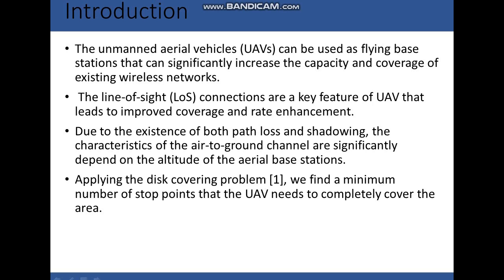For basic introduction, the unmanned aerial vehicle can be used as a flying base station so that you can significantly increase the capacity and coverage of the existing wireless network. The line of sight is the key feature of the UAV that has to be improved, and coverage and rate enhancement has to be done. Due to the existence of path loss and shadowing, the characteristics of the air-to-ground channel vary, and it all depends on the altitude of the aerial base station.